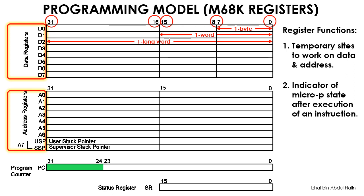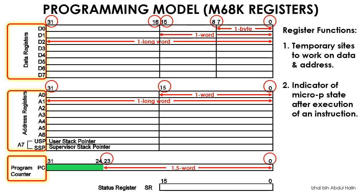The size of each address register may be either 16-bits or 32-bits only. A program counter is also available as one of the registers in the programming model; it is 24-bits in size. Its main purpose is to keep track and point to the address of instructions in memory that are to be executed by the 68k microprocessor during the fetch-execute cycle. We will have a look at the fetch-execute cycle in part 5 of this video series.